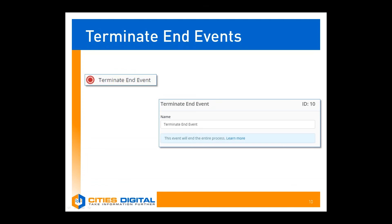The terminate end event can be placed in the process modeler as a task, just like the original end event from previous versions. Its properties are really similar — it doesn't allow for any drastic customization. The best you can do is rename that terminate end event, and we'll cover exactly how this could be used in a couple of slides.